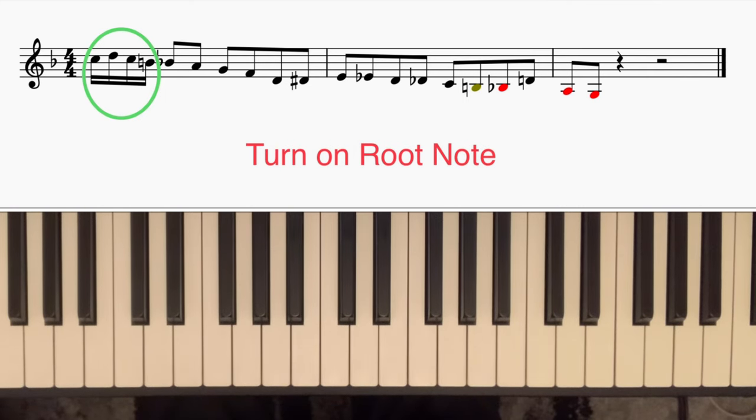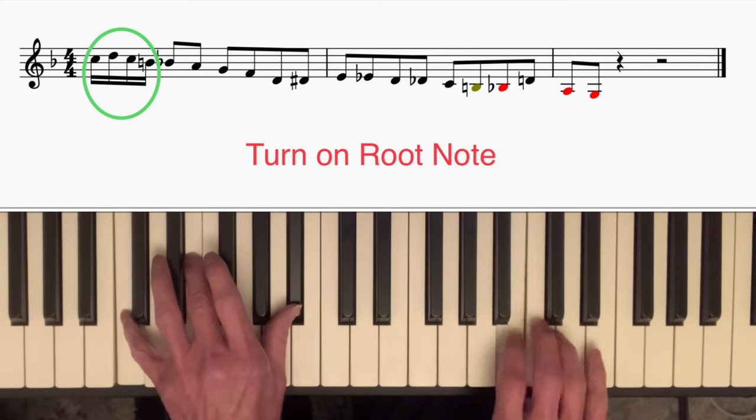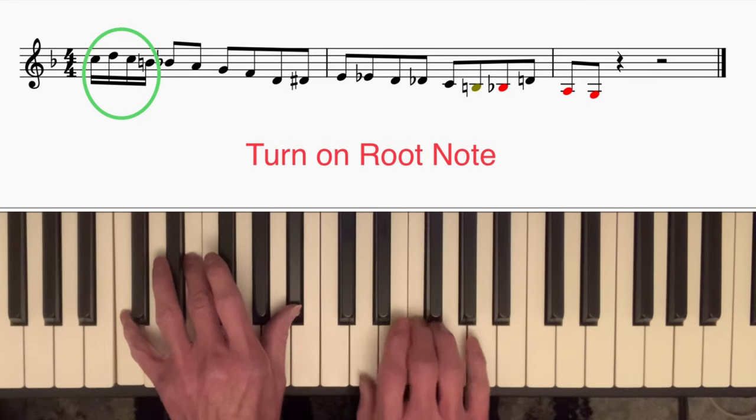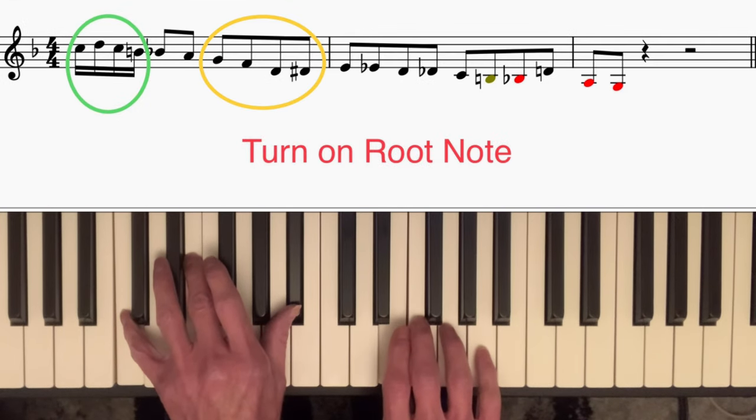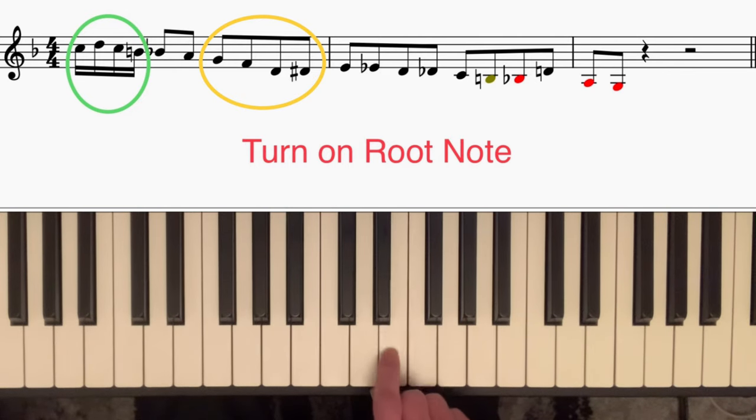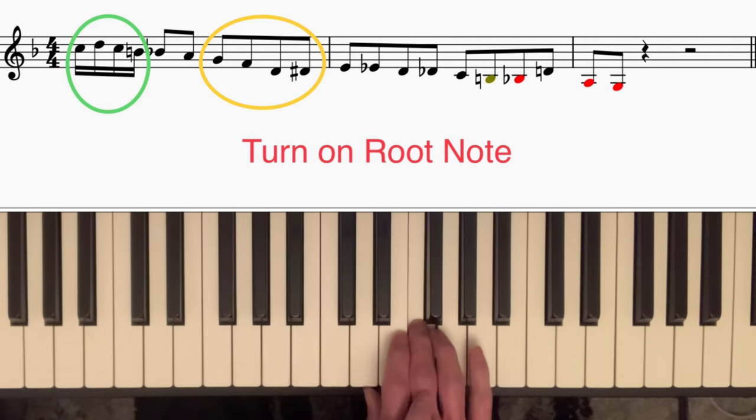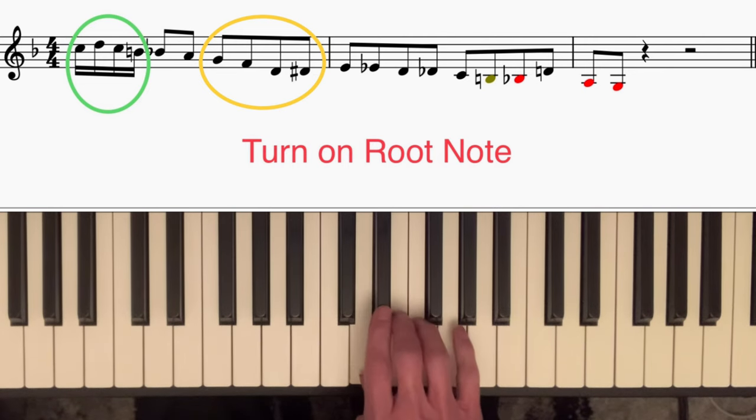So it's worth just looking at what else I added in that first example. That's a bebop cliche that I've talked about before. I'm aiming for the third of C7 and I'm circling around it. I'm playing the note above it, the note below it, and then a chromatic passing note going back up, taking me to the third.